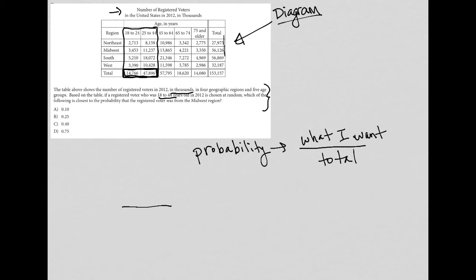So I'm going to go to my calculator and just find out, what is 14,766 plus 47,896? Because that gives me the total number of voters in that age range. And what I get here is 62,662.